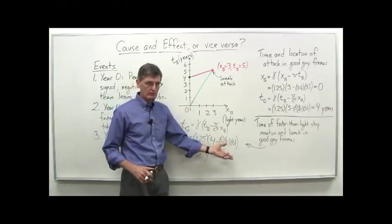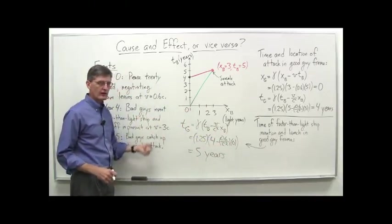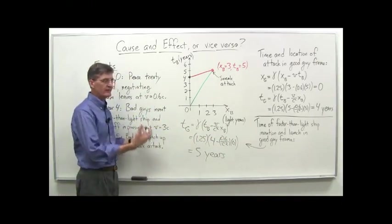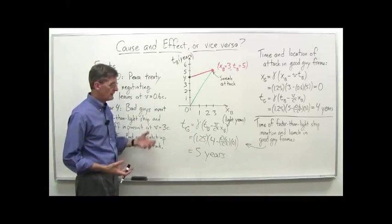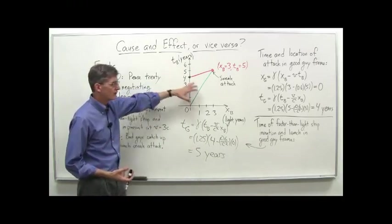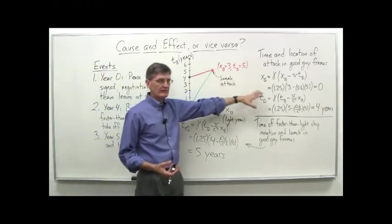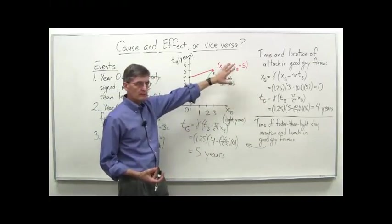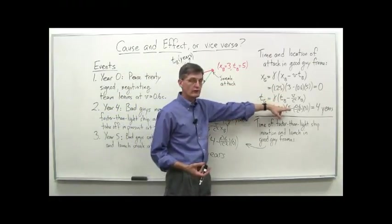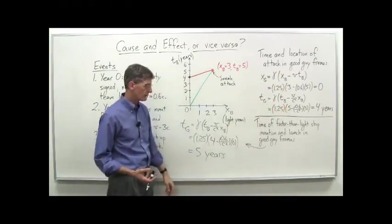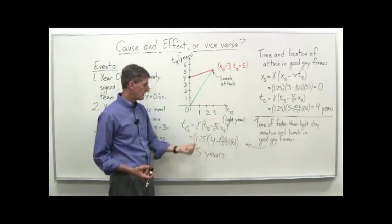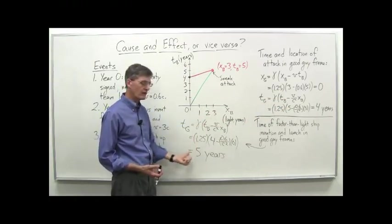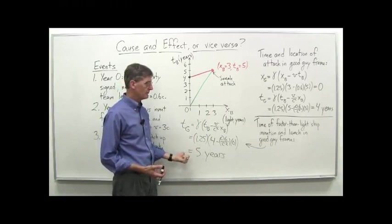So this is another indication that things cannot move faster than light. Because if something, either a material object, or also even a signal bearing information, if it could move faster than light, then you can have situations like this, where the effect happens before the cause. And again, what we see here is a sneak attack by our Lorentz transformation calculation occurred at 4 years, according to the good guy's clocks. And at that point, according to their clocks, the ship that just attacked them hadn't even been invented yet, and hadn't been launched yet. Because that's only going to occur in year five in their system of clocks.